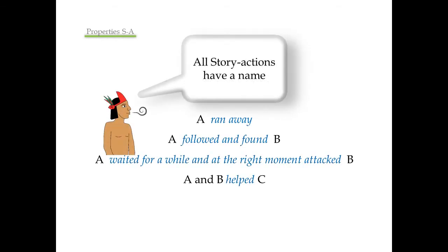All story actions have a name. The name can be one verb like helped, ran away, can be two verbs like followed and found, or it can be more elaborated strings like waited for a while and at the right moment attacked.